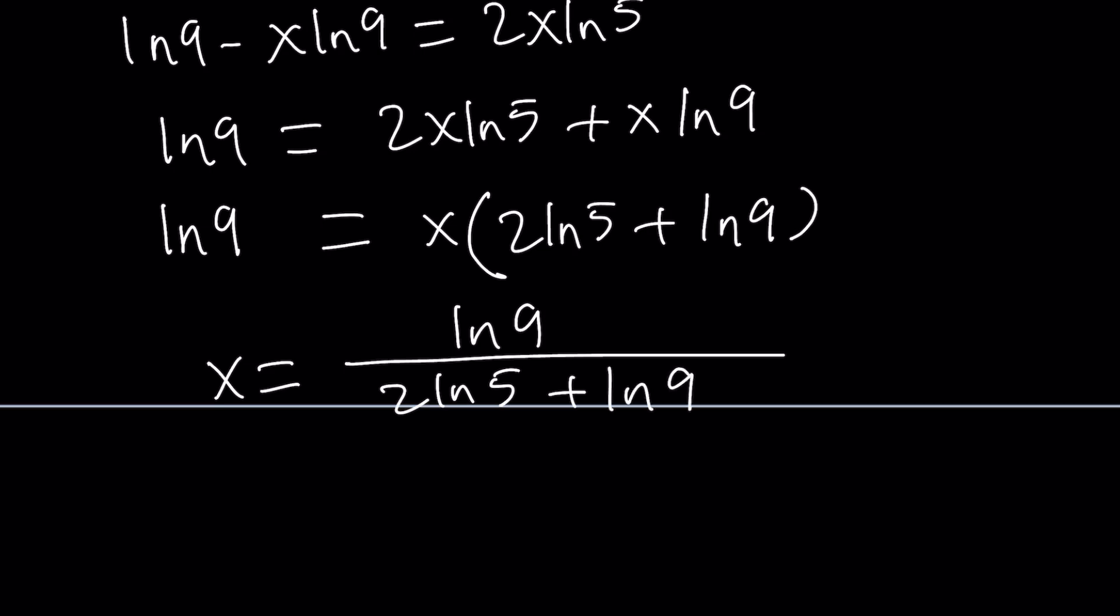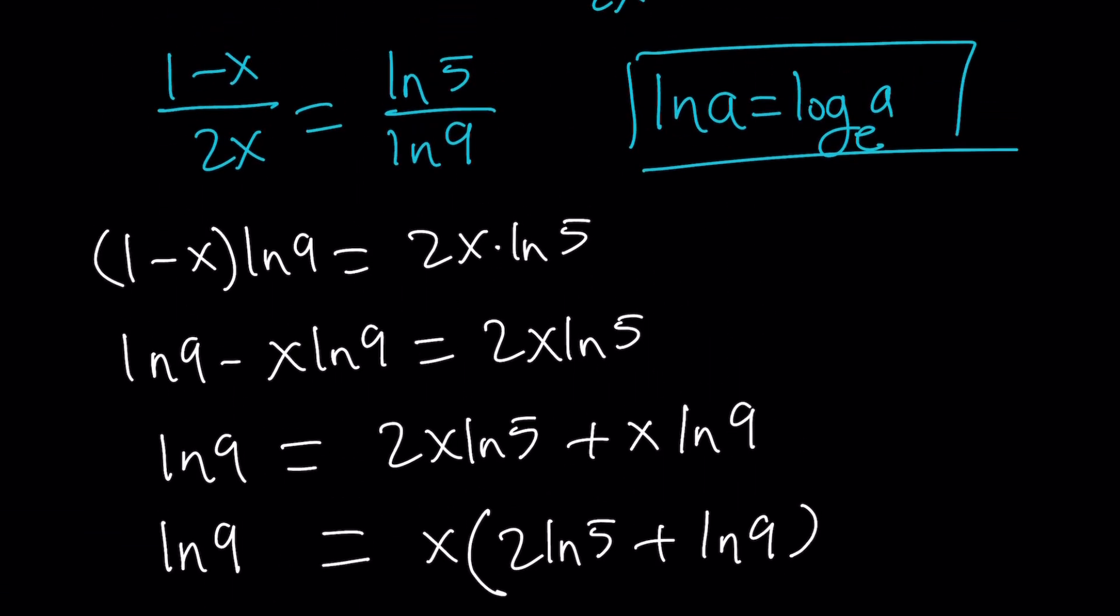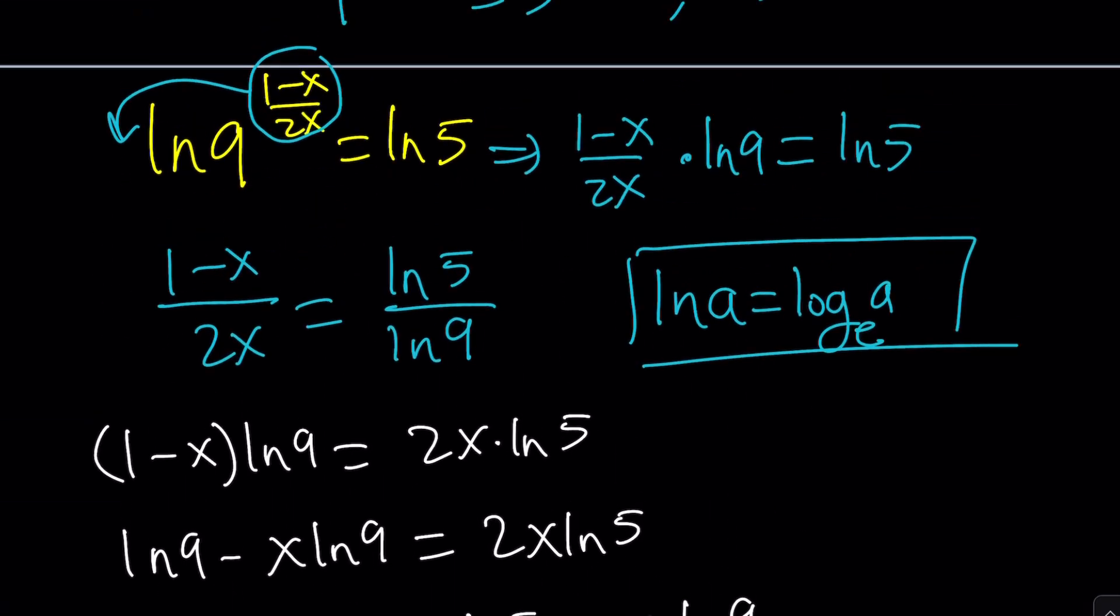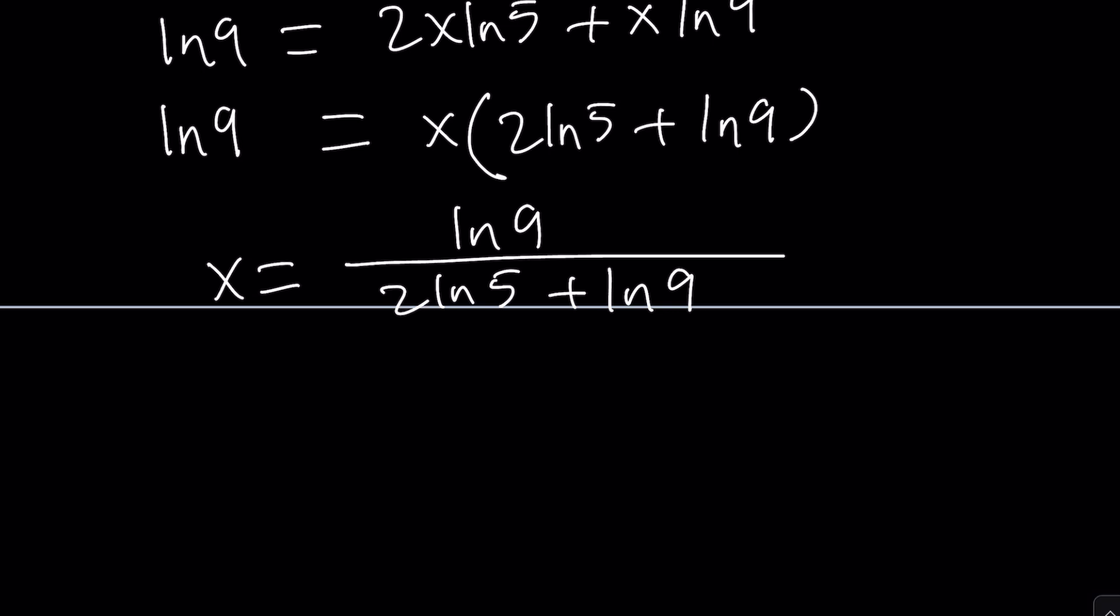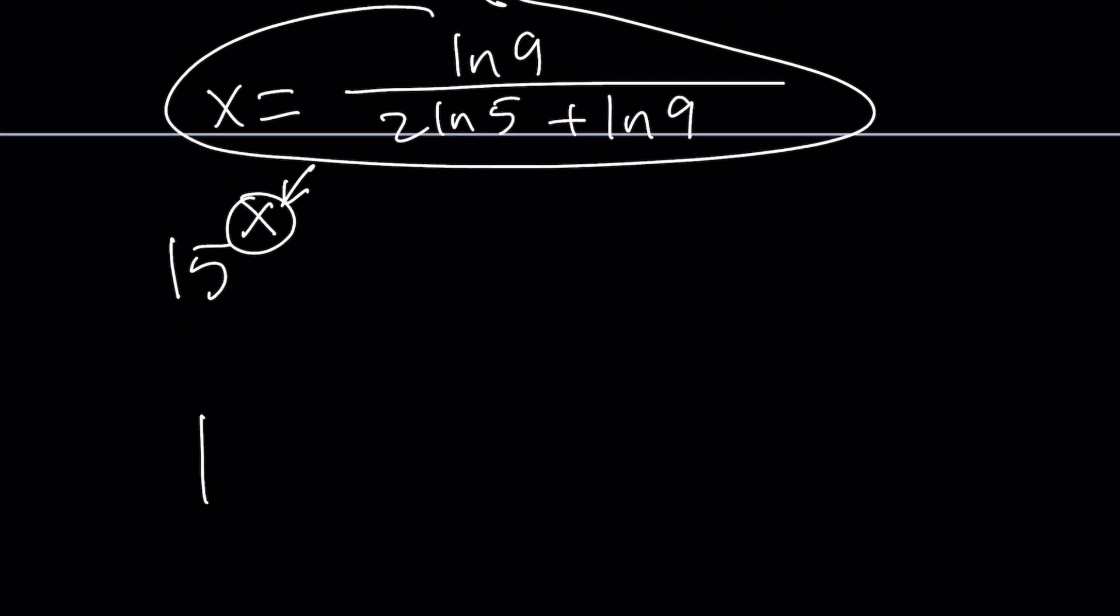We're going to plug it in. That's the essence of the first method. We're looking for 15 to the power of x, and I have a numerical value. Notice that this is a constant because 9 and 5 are constants. We're going to use substitution. It's going to be 15 to the power ln 9 over 2ln 5 plus ln 9.